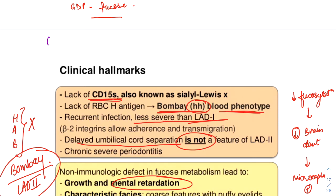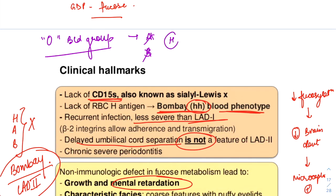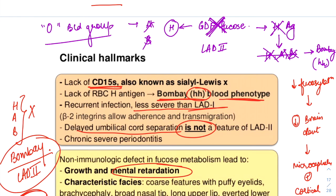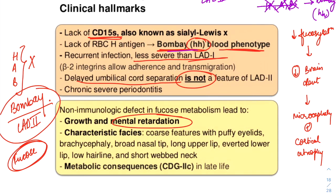The normal O blood group has absence of A and B antigens but has the H antigen present. This H antigen is formed from GDP fucose. But in LAD2 patients, this fucosylation mechanism to form GDP fucose is absent, so the H antigen will be absent, leading to absence of H, A, and B — all three absent — resulting in the Bombay blood group, the HH phenotype.